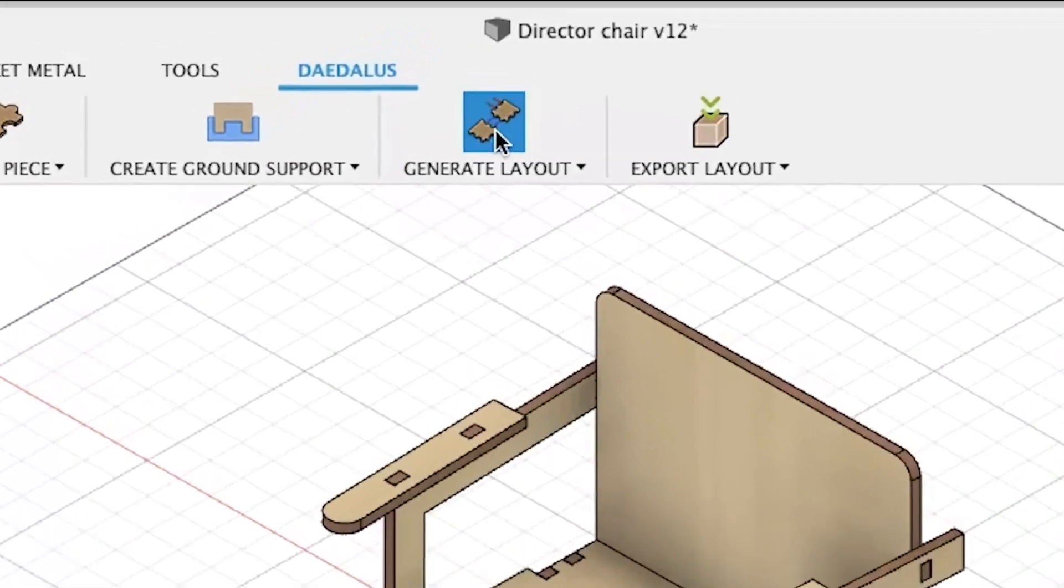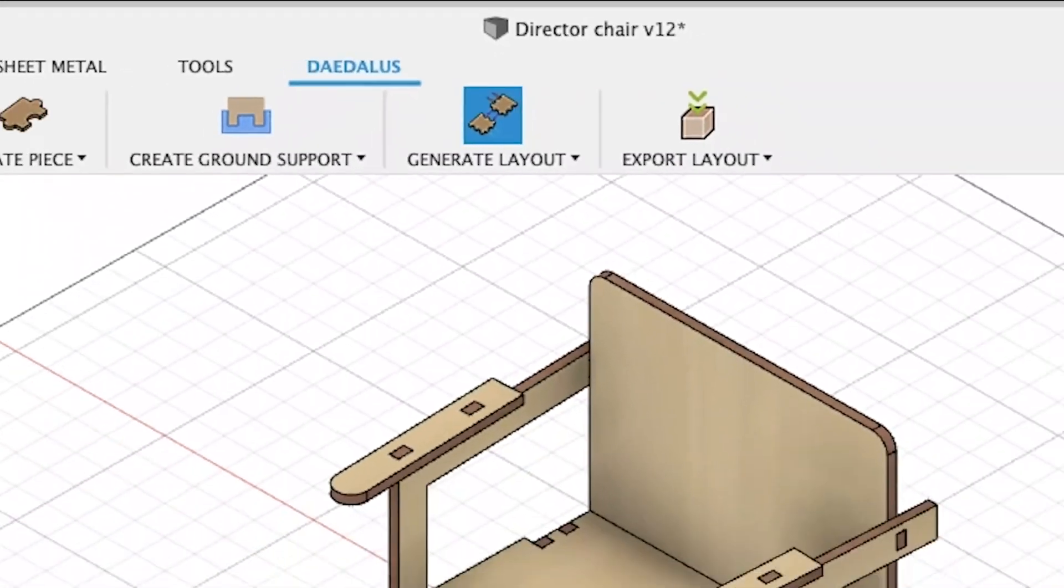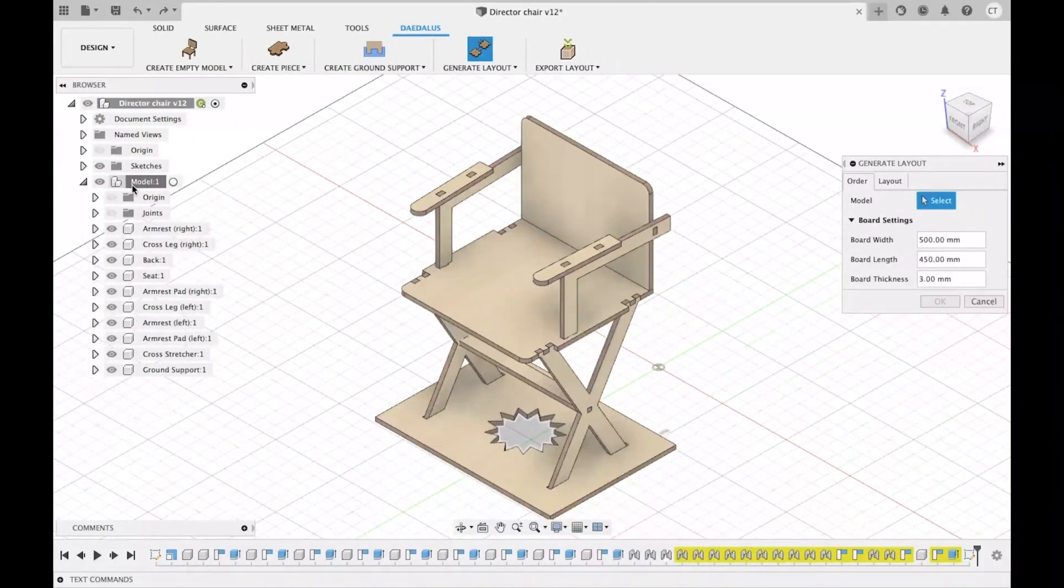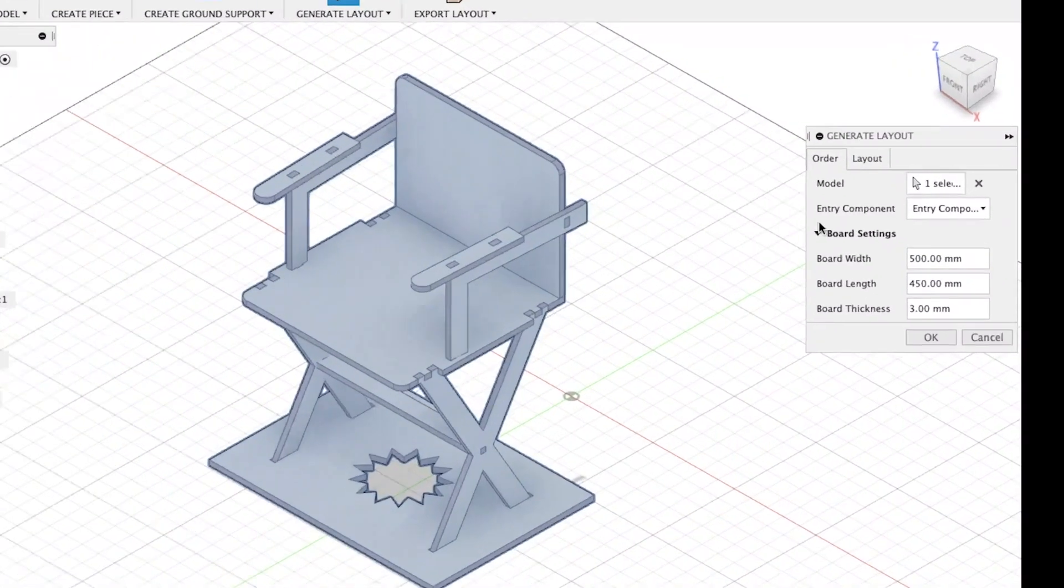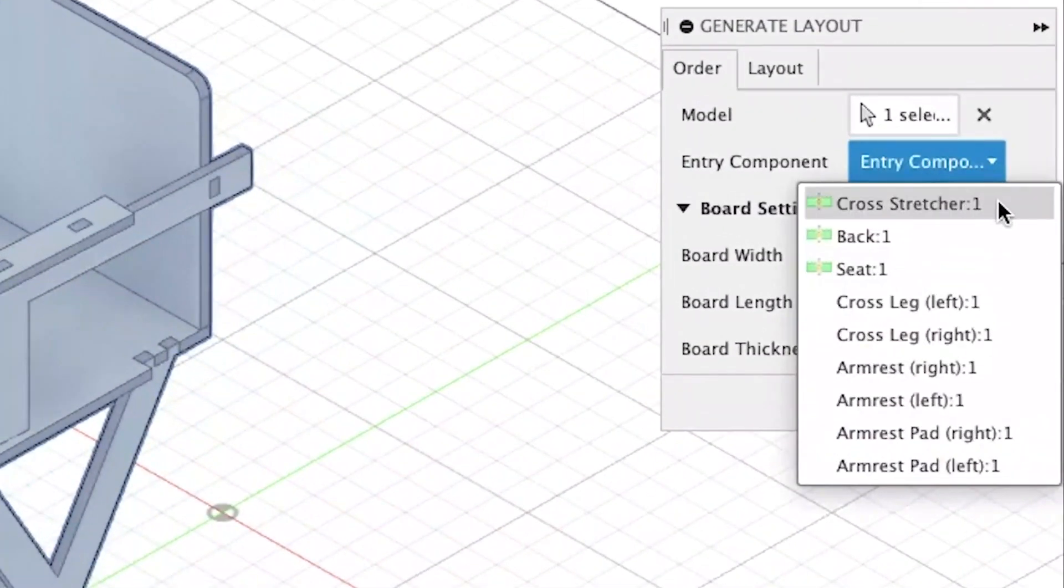The user can click generate layout and select an entry component provided by Daedalus. Entry component suggestions and ordering were determined based on the design heuristics distilled from our formative study.